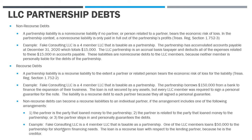Another example: fake consulting LLC, a four-member LLC taxed as a partnership — if one of the members loans $50,000 to the partnership, that's a related-party loan. So what is otherwise a non-recourse debt because there's no personal guarantee becomes recourse debt to that lending partner, because they are the creditor and bear the risk of loss.